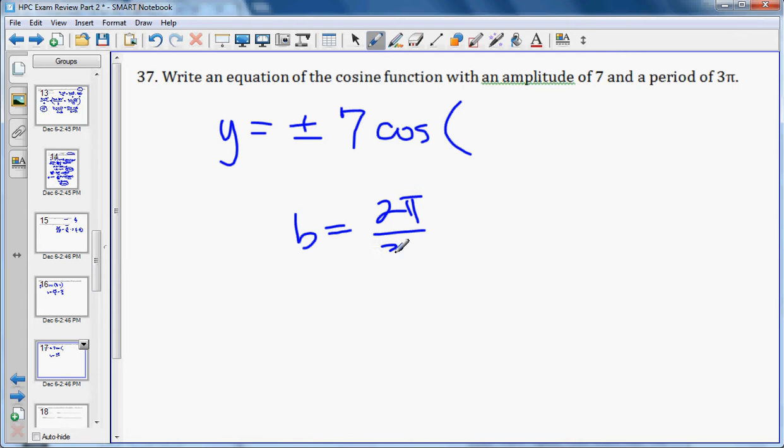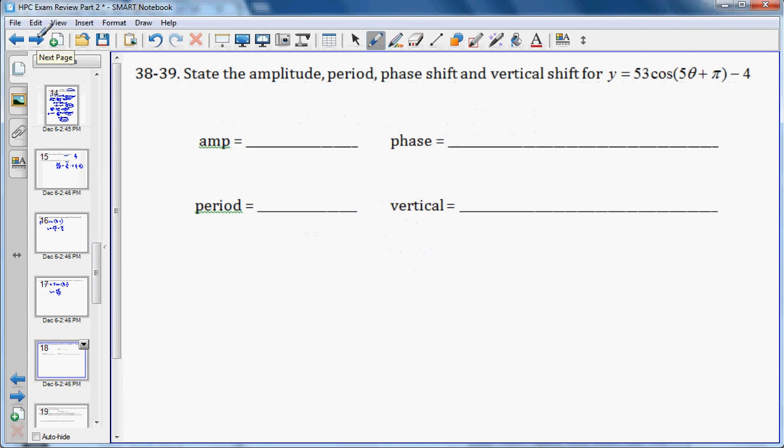Now we're given the equation 53 cosine 5θ plus π minus 4. We're asked to state the amplitude, the period, the phase shift, which is the same as the horizontal shift, and the vertical shift. The amplitude is 53, that's the coefficient out front. The period is 2π over the coefficient in front of theta, which is 5. To get the phase shift, we see that it's plus, that tells us it's to the left. And we need to do C, which is this number, over B, which is this number. So it's shifting to the left π over 5. And vertical, we can tell by that sign right there, it's shifting down. And we know by this number, it's shifting down 4.